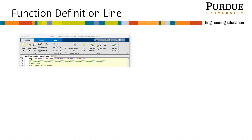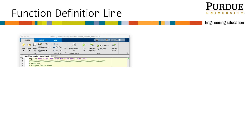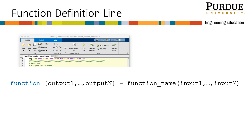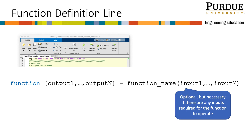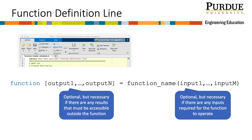The very first line of a UDF is the function definition line, which tells MATLAB this is a function and allows for the exchange of input and output information. At a minimum, it must contain the keyword 'function' — always the first word — and the function name, which is the M-file name without the .m extension. If there are input arguments, they must follow the function name in parentheses. If there are output arguments, they come before the function name followed by an equal sign. Two or more output arguments must be in brackets.